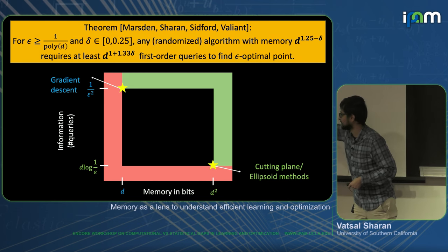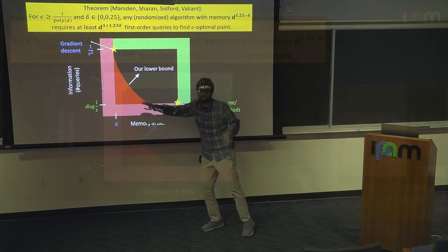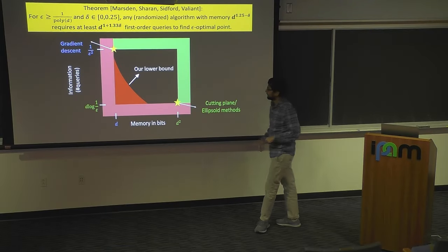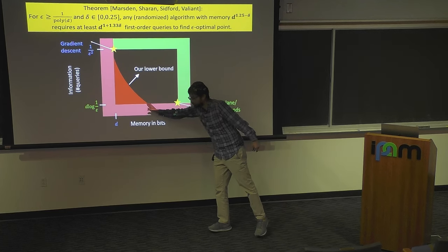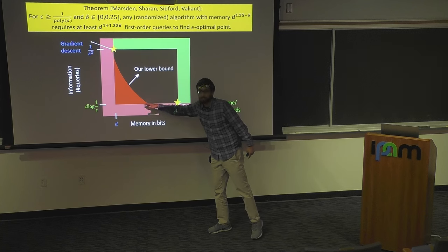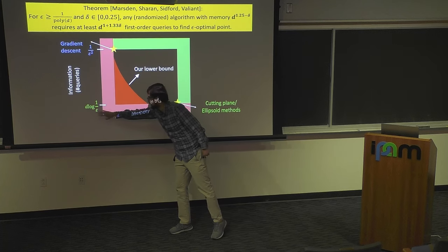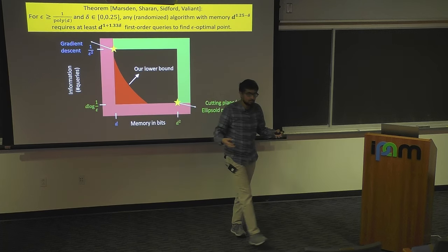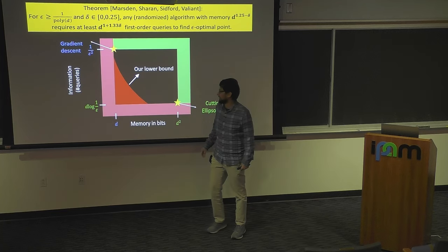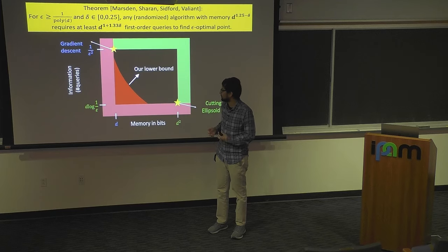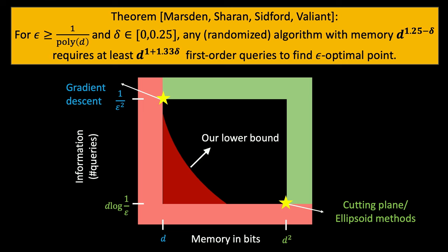We had this plot before with the two algorithms and the two impossible regions. What this result really says is that there is a region here which is not achievable by any algorithm. If you use memory less than d^1.25, then you cannot get the optimal query complexity. So if you want to optimize with d polylog(d) queries for any epsilon — even if it is quasi-polynomially small in d — then if you have less than d^1.25 memory, you must use a super-linear number of queries.